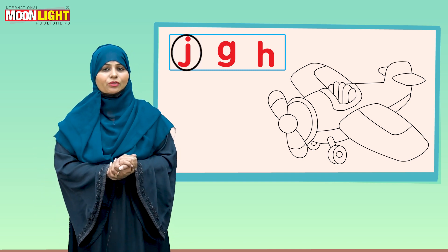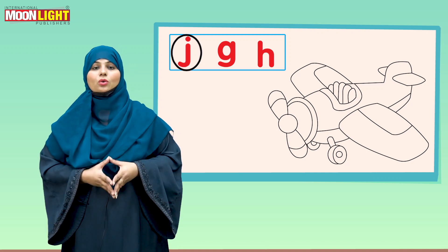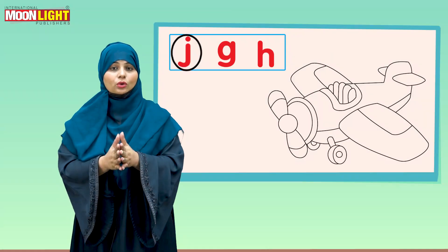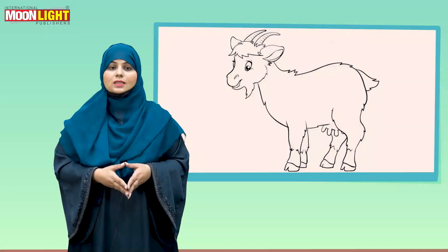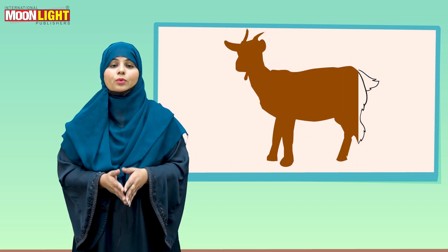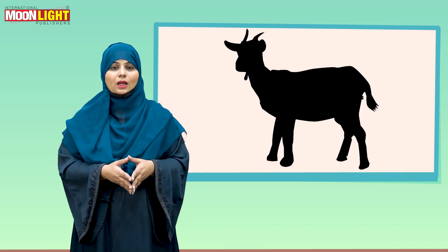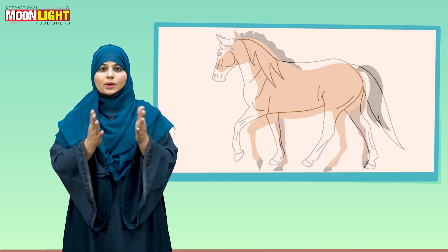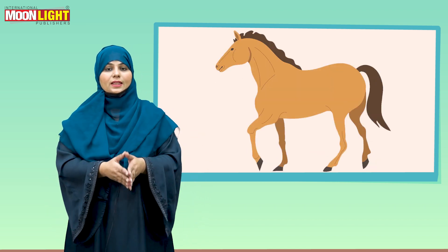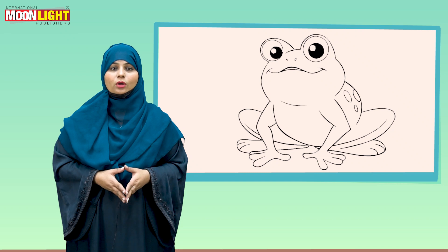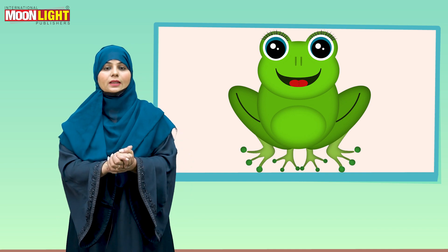Now there is the last picture, and this is the picture of a jet. There are three letters below jet: the first one is J, the second one is G, and the third one is H. J says 'j' — very good! The first letter J is going to be circled. Now circle it.